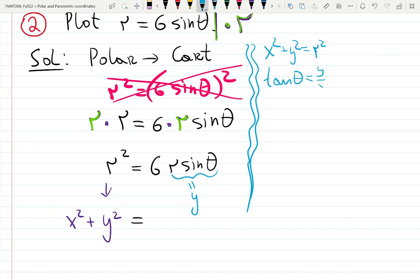Tangent theta is y over x. We know that. And then we know what x is. It's r cosine theta. And we know what y is. It's r sine theta. In this whole chapter, usually you stare at these formulas for like 10 minutes, and some of them just need to be used. That's it.